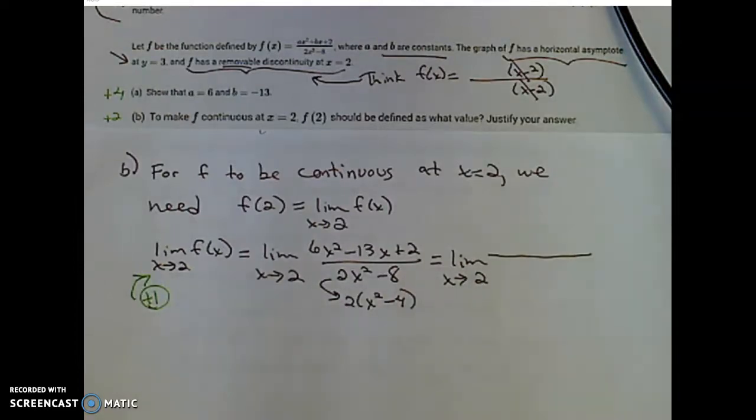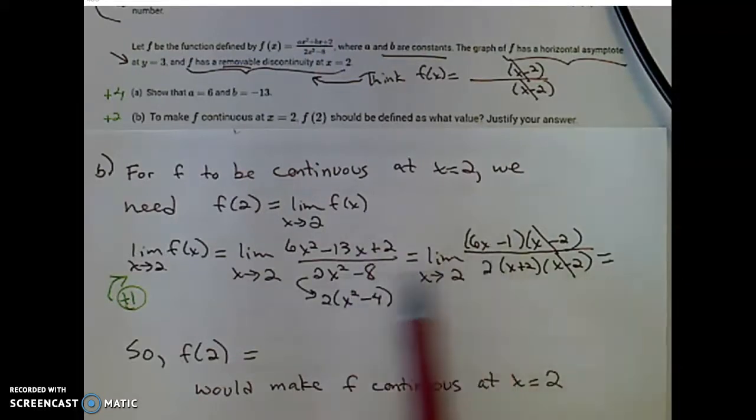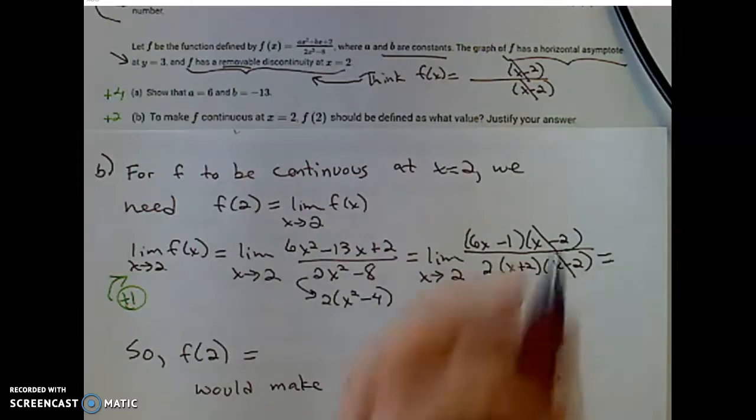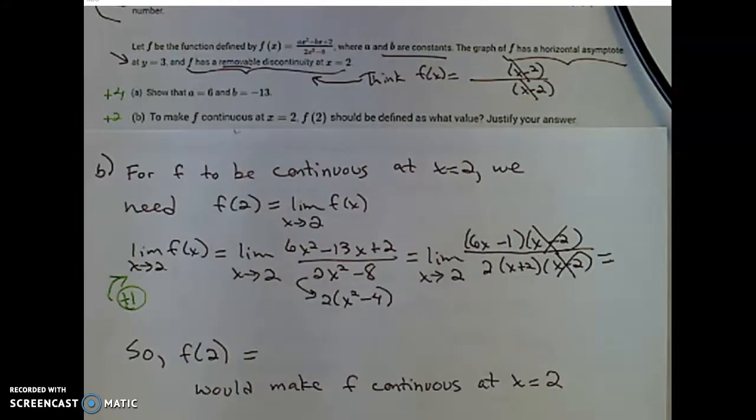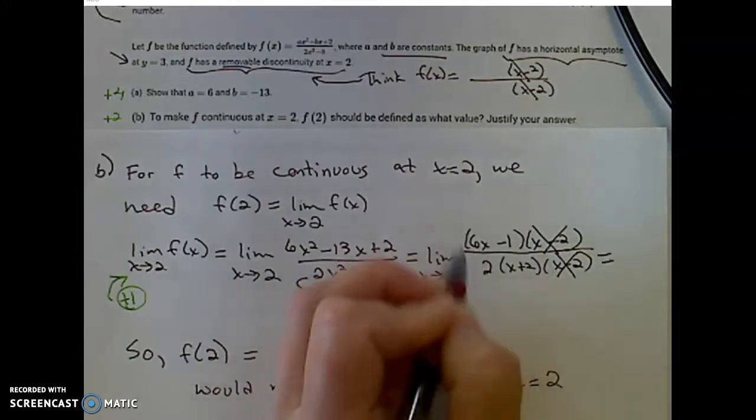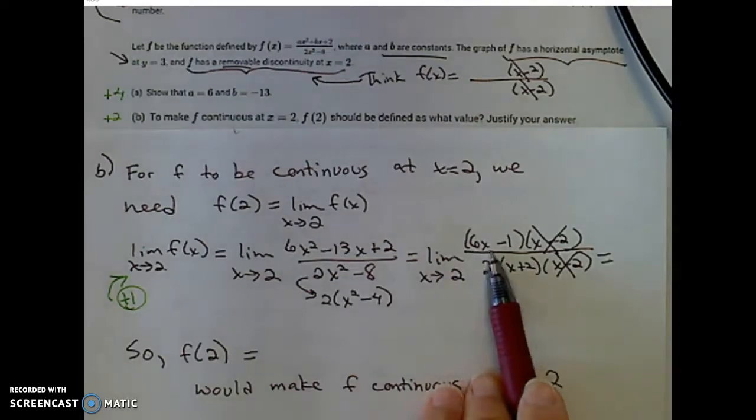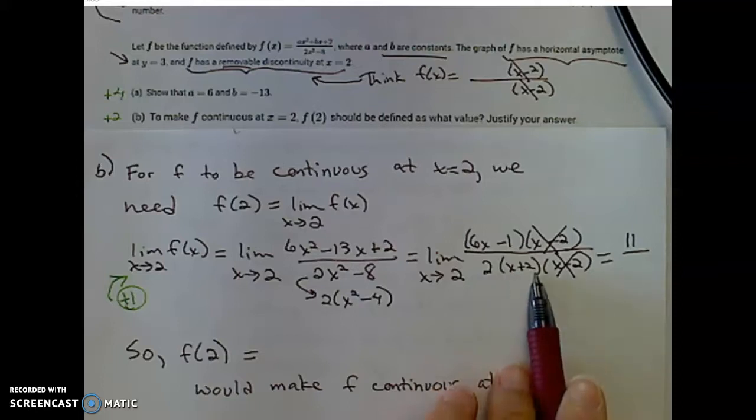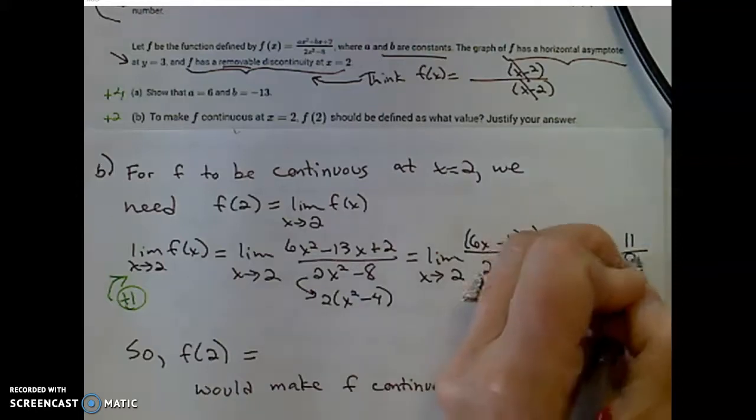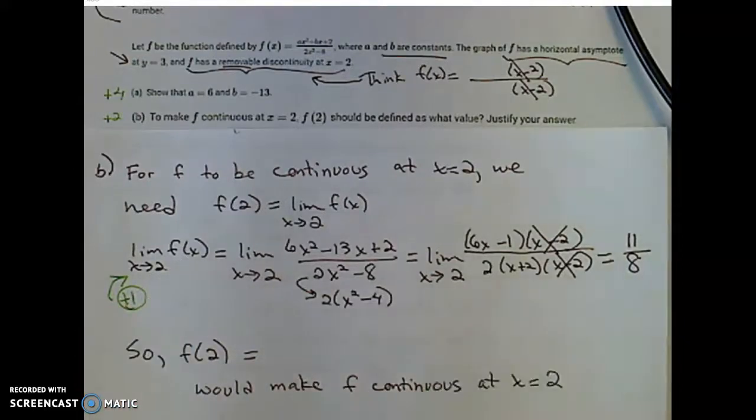Pause and factor if you have not. Numerator factors. Factor out the two. Denominator factors. There's where my removable discontinuity was. What I'm left with, I can plug in x equals 2. So if I plug in x equals 2, that's 12 minus 1, which is 11. Plug in x equals 2. 2 plus 2 is 4 times 2 is 8.